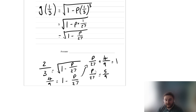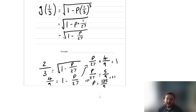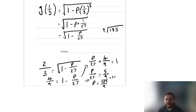Using bus stop division: 135 divided by 9. 9 into 13 goes once remainder 4, then 45 divided by 9 is 5. So p is equal to 15.